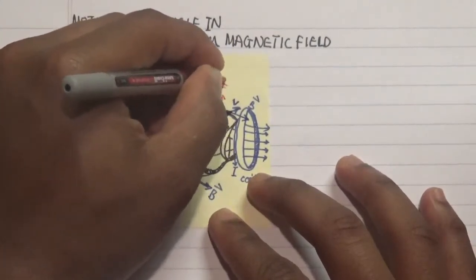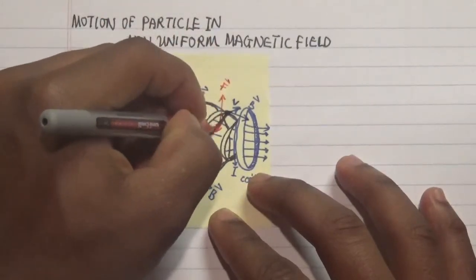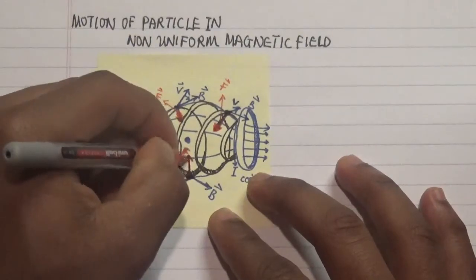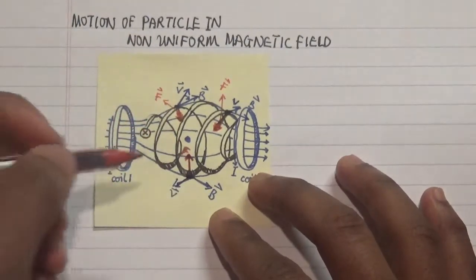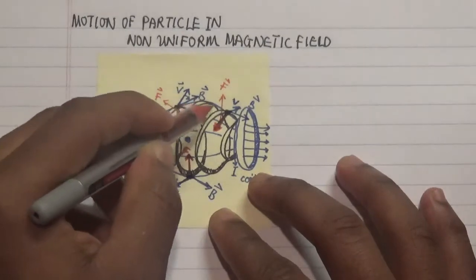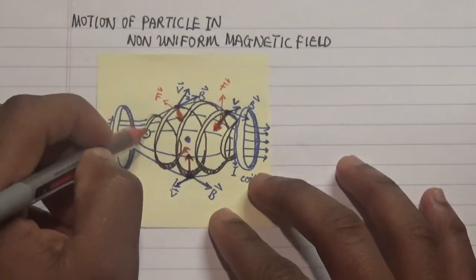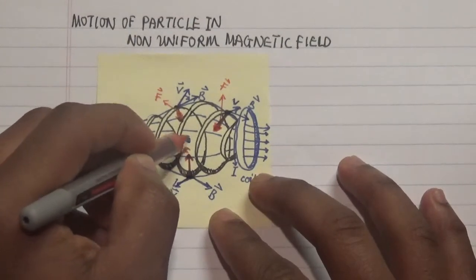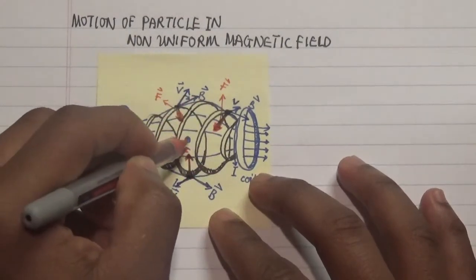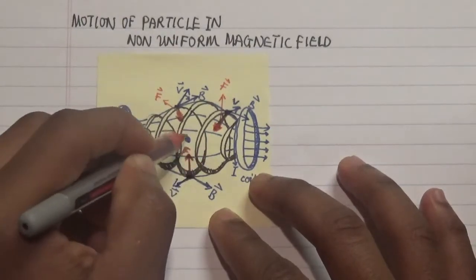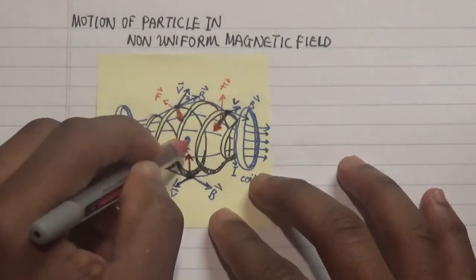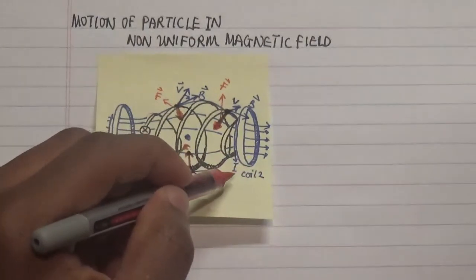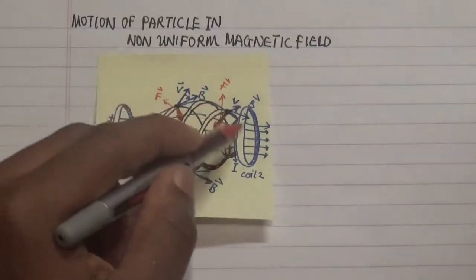What can we say about all three forces at each point? We realize that all the forces at each particular point along the motion of our charged particle are actually pointing towards the center of the magnetic flux — that is, the midpoint between coil one and coil two.